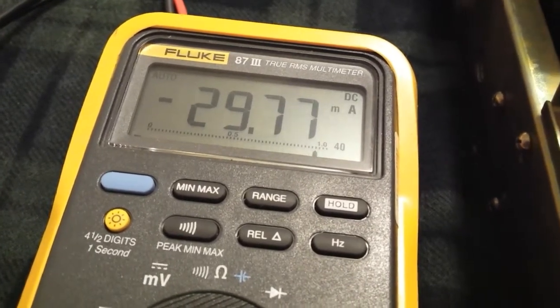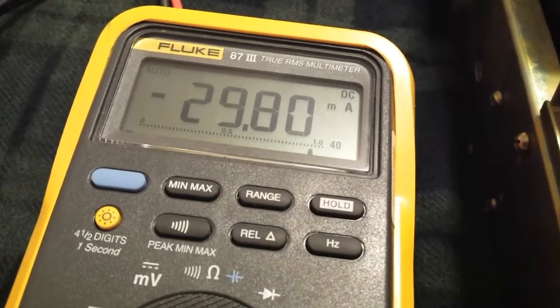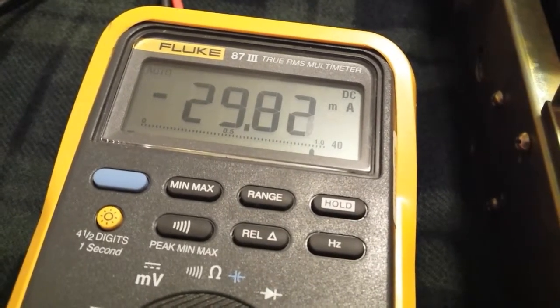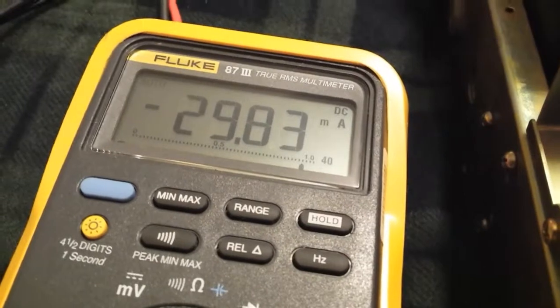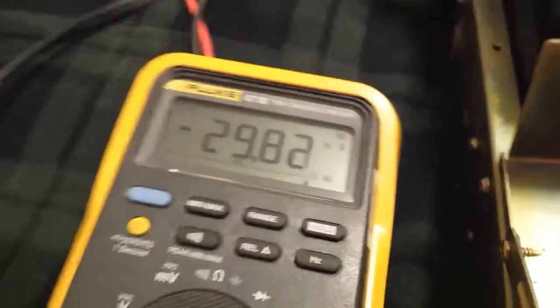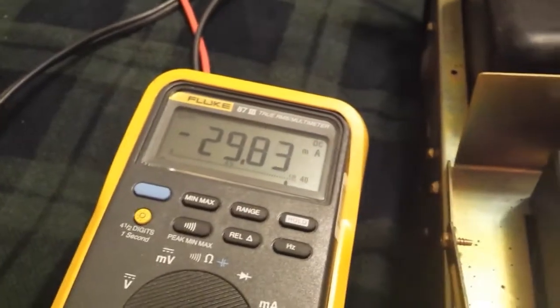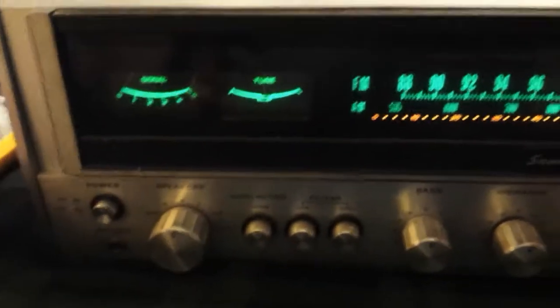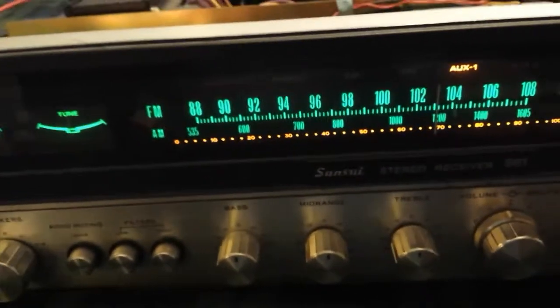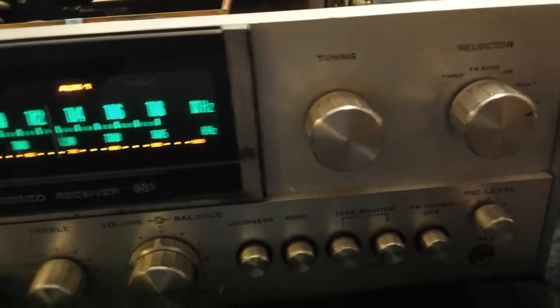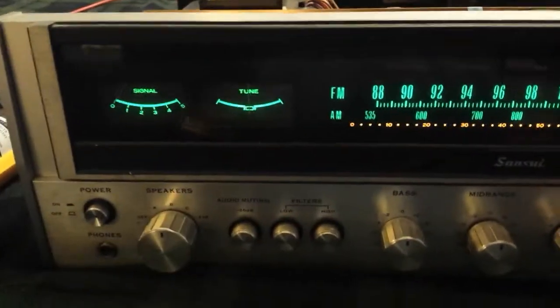All right, I'm going to stay at this. I'm happy with that. We got around 30 milliamps each side, so the transistors are happy. They're biased correctly. There's the front of the beautiful 881. So part three of DC offset adjustment and biasing of the Sansui 881.